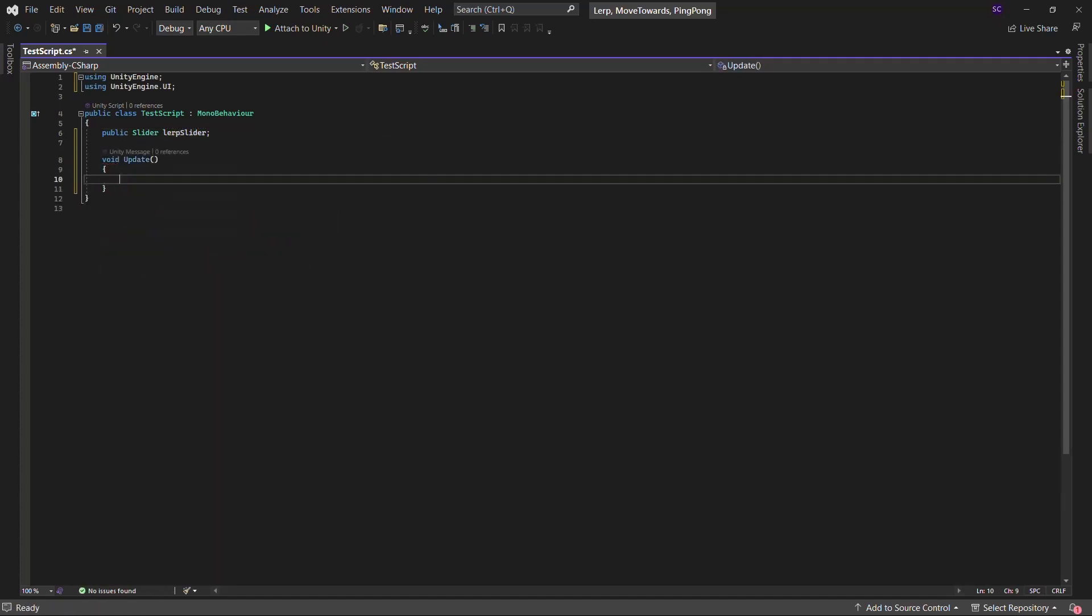Now, inside the update method, we will update the Lerp slider value on every frame using the Lerp function. So, let's first understand the workings of the Lerp function.